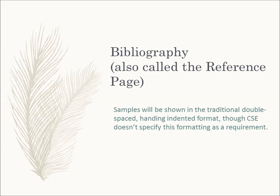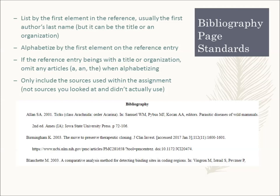The last page of your assignment will contain all of the sources used in the assignment — this is a bibliography or reference page. Most citation styles prefer the format of double-spaced text with a hanging indent on the bibliography page. While this is standard, CSE doesn't specify, so consult your assignment guidelines and/or instructor. The bibliography page includes sources alphabetized by the first element in the entry. While this is usually the first author's last name, an organization can be used as an author too. If no author exists, use the title. Always use the first element in the reference entry to alphabetize the list.